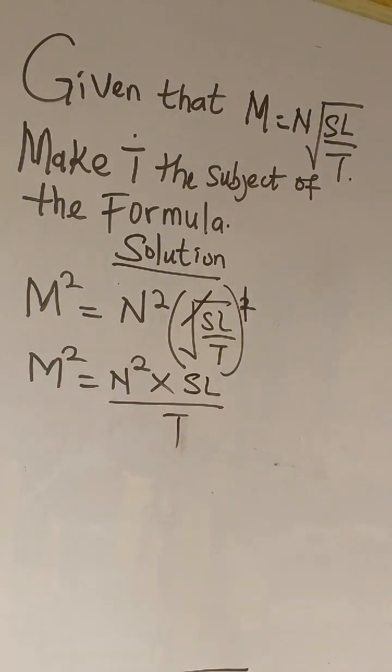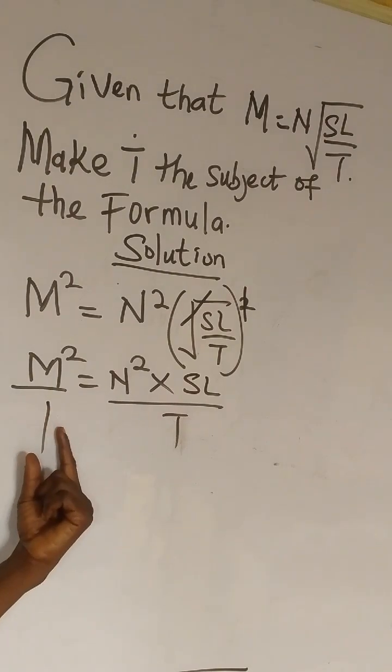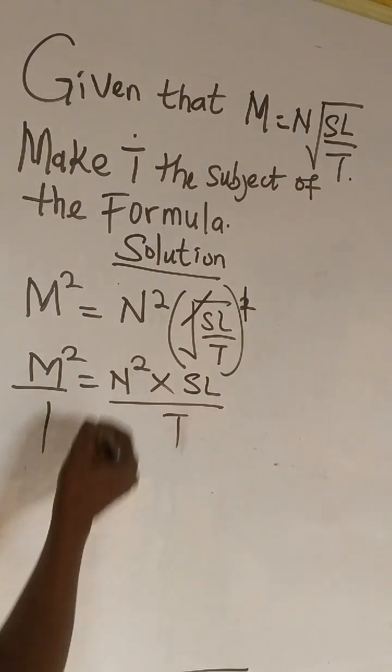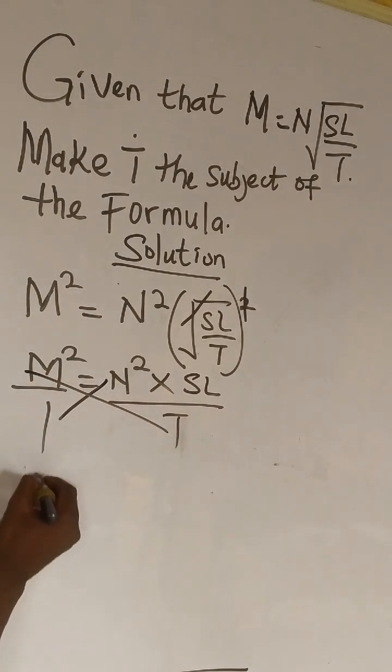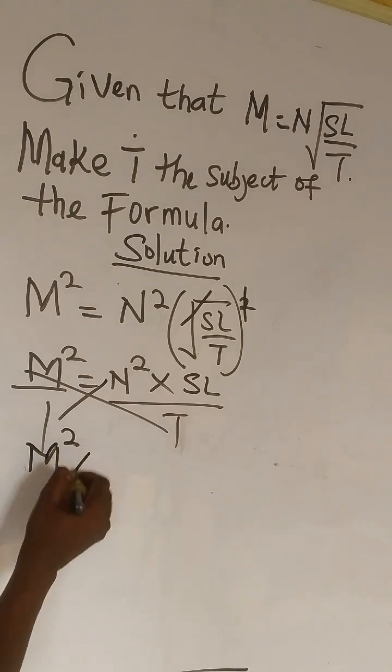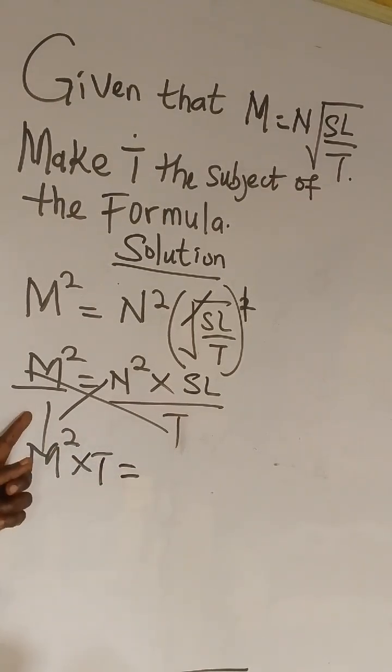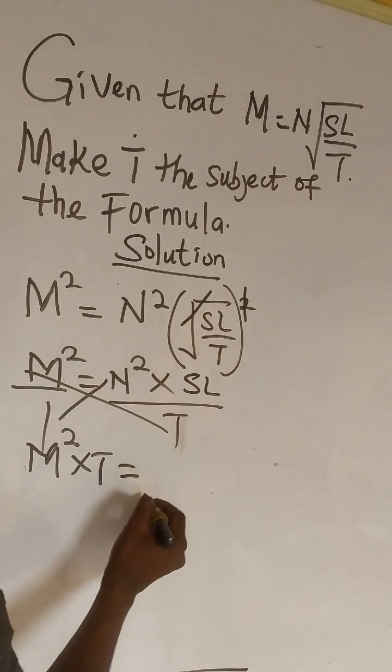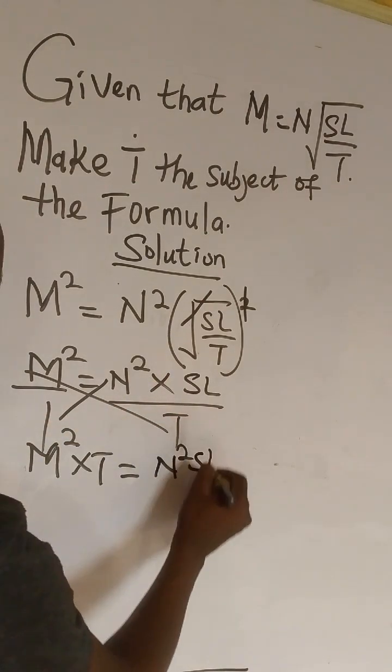So from here, we make this over 1 so that this is a fraction and this will also be a fraction. So we cross multiply. We now have M squared times T equals 1 multiplied by this, which will give us N squared SL.